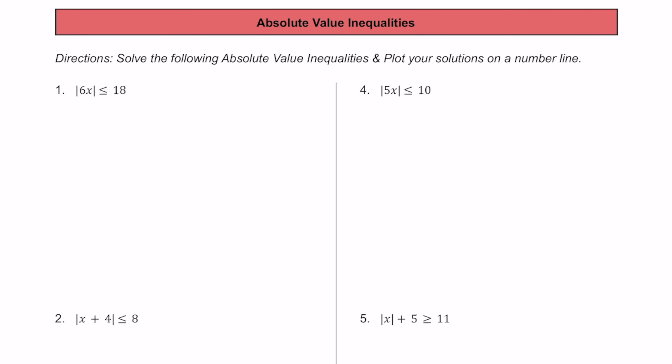Let's practice solving absolute value inequalities together. For number one, we have the absolute value of 6x is less than or equal to 18. When we're solving these, we want to make sure we have the absolute value bars isolated on one side, which we do in this problem. So right from the start, what we're going to do is separate this into two different inequalities that don't have the absolute value.